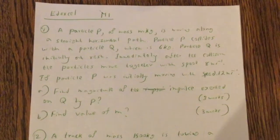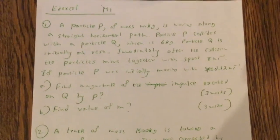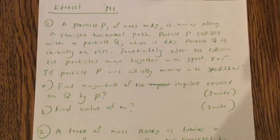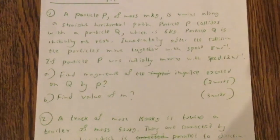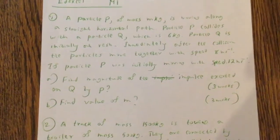A particle P of mass m kg is moving along a straight horizontal path. Particle P collides with a particle Q, which is 6 kg. Particle Q is initially at rest. Immediately after the collision, the particles move together with speed 8 m per second.